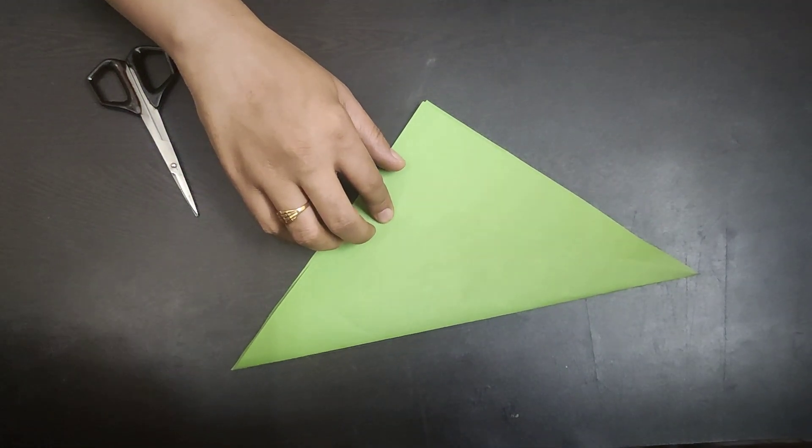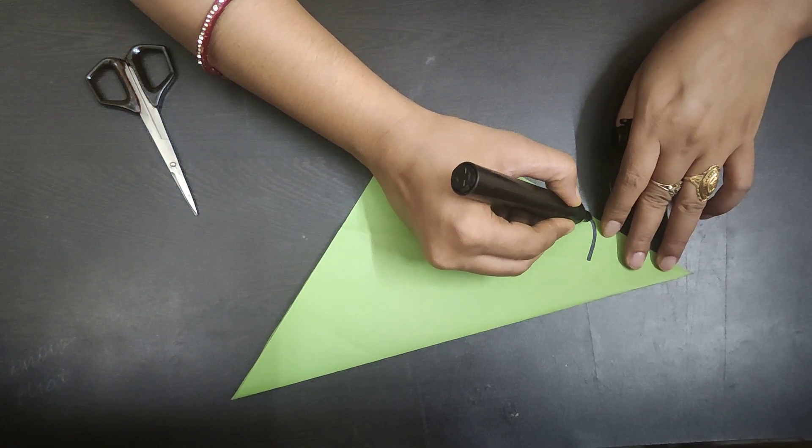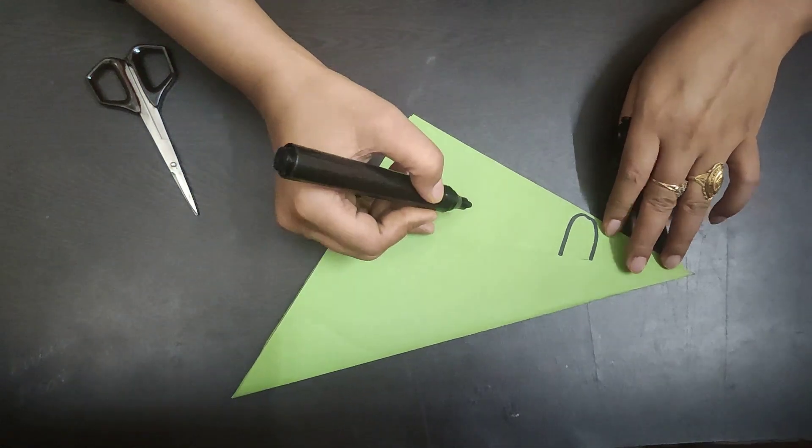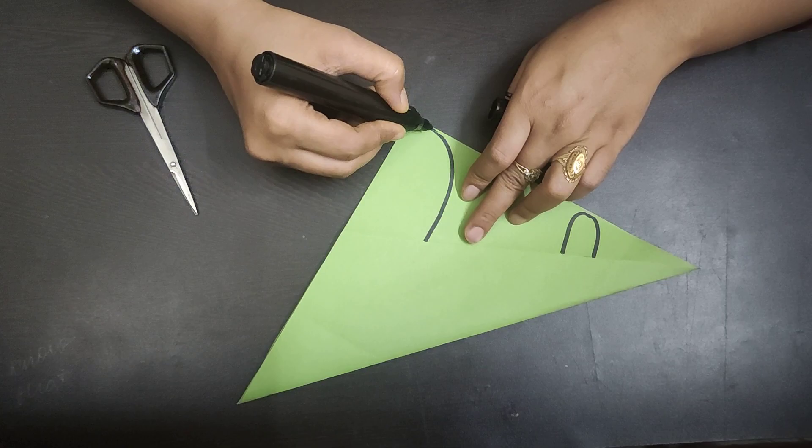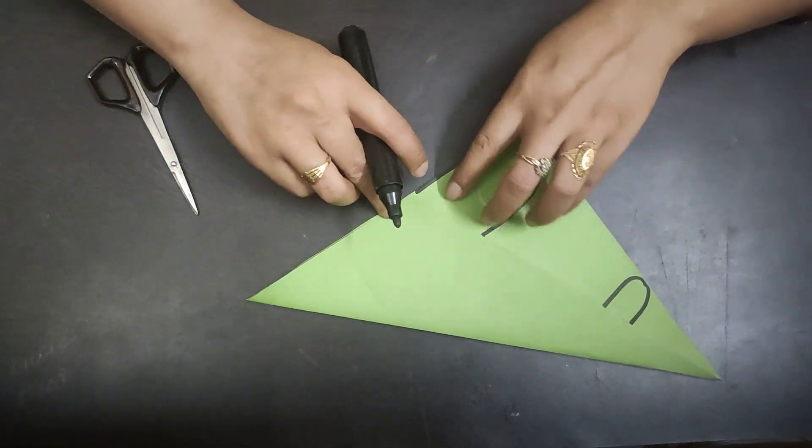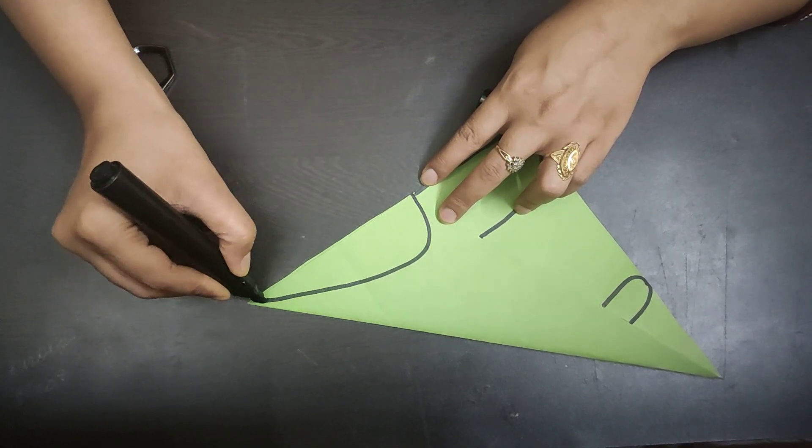Now with the help of black marker, make this shape. Make a U shape along this line, one here and one at the end. And from this line to this, make a U shape like this.